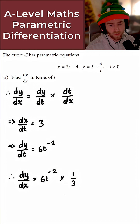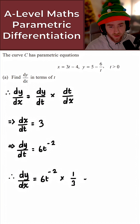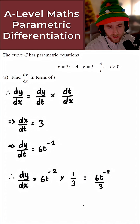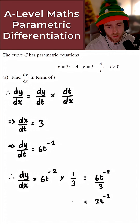So we multiply by 1 over 3 — nice and straightforward. Evaluating and simplifying: 6t to the minus 2 all over 3, which finally simplifies to 2t to the minus 2 for dy/dx.